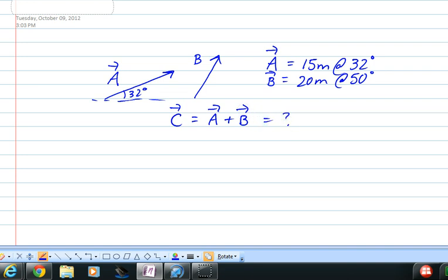So the instinct is to say 35, 15 plus 20, but we know that that's not really how we add vectors.